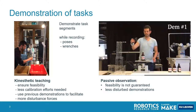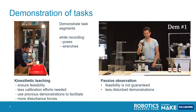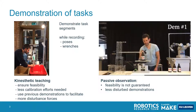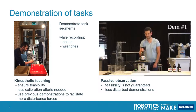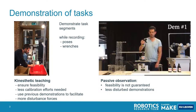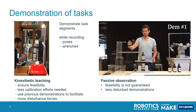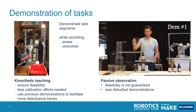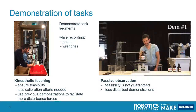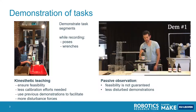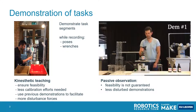If we want to model the human behavior, of course we first have to measure it and demonstrate the task segments in order to establish these models. When we record these task segments, we can measure both poses and wrenches, so that we have the complete motion and interaction with the environment. We basically measure these segments in two ways.